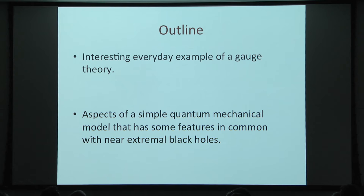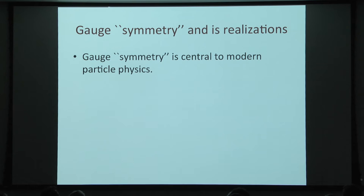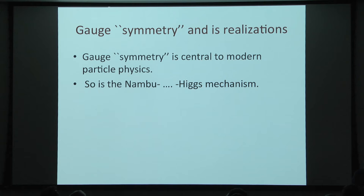Now let's first talk about the first topic. We know that gauge symmetry and its realizations are very important and central to modern particle physics and condensed matter. Of course, it's the mechanism of so-called symmetry breaking, or the realization of the gauge symmetry in the Higgs phase, to which Nambu also contributed in a very important way.